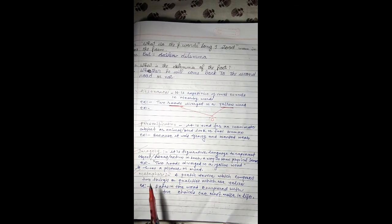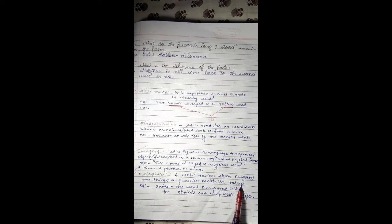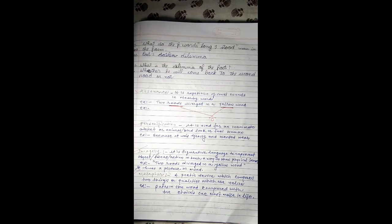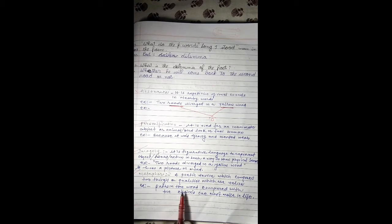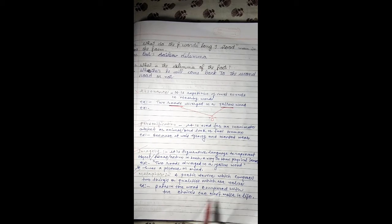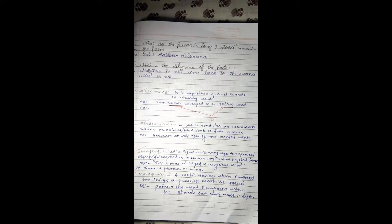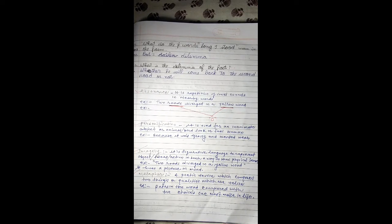Metaphor is a poetic device which compares two things or qualities which are unlike. When we compare two different objects by taking one similar quality, that is metaphor. Like paths in the wood compared with the choices one must make in life. Just as in the jungle we see two different paths and have a choice of where to go, similarly in our life we have many options for one thing and we must choose which option to take.